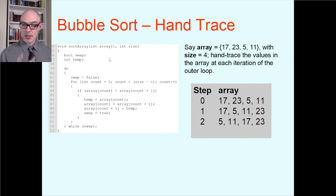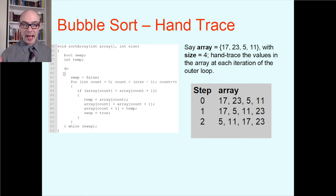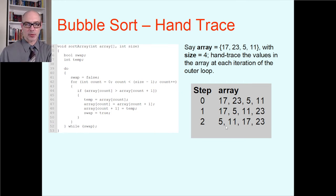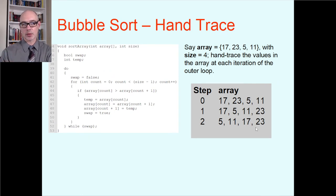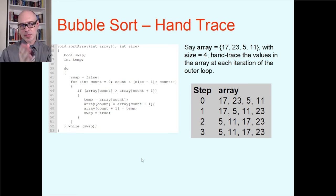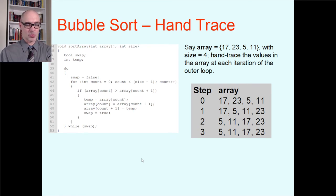Did we just make any swaps? Yes, we swapped a couple of times for the 17, so swap is true at this point and we have to go back to the do line and do this again. For the third pass: compare 5 and 11 — that's fine. Compare 11 and 17 — 11 is less than 17, that's what you want. Compare 17 and 23 — that's what you want, don't swap. At the end of step 3 the array is still 5, 11, 17, 23 — the same order as step 2.